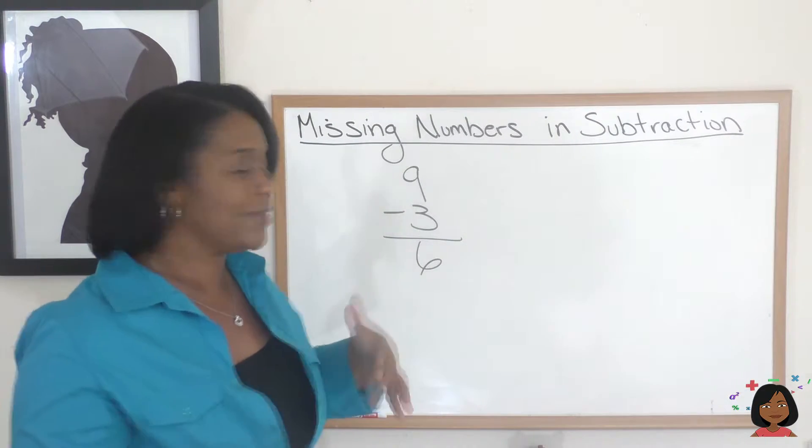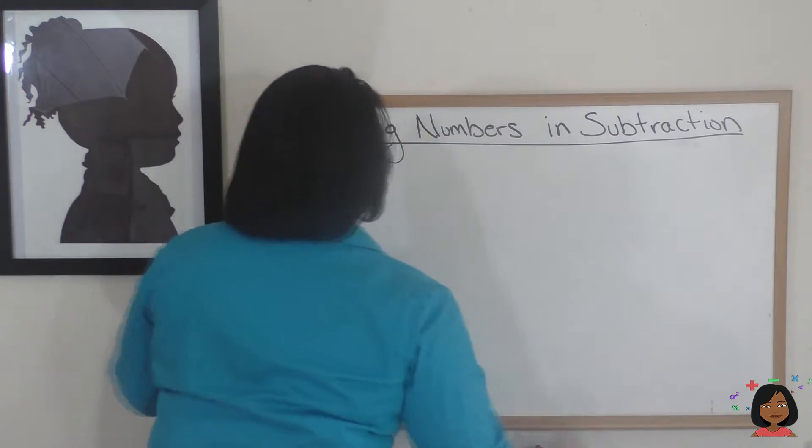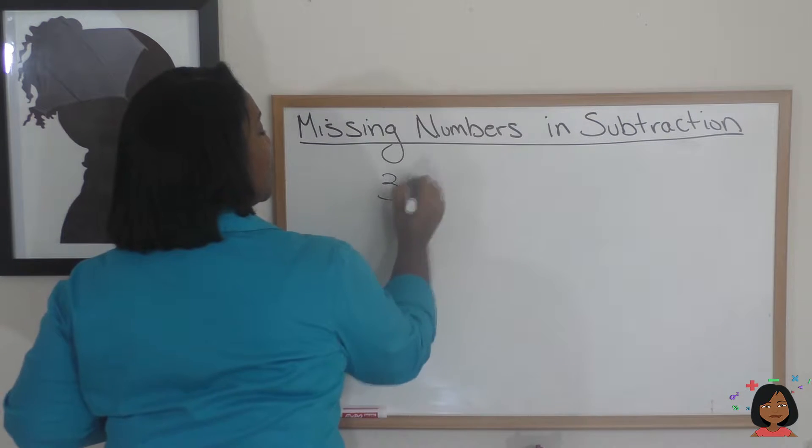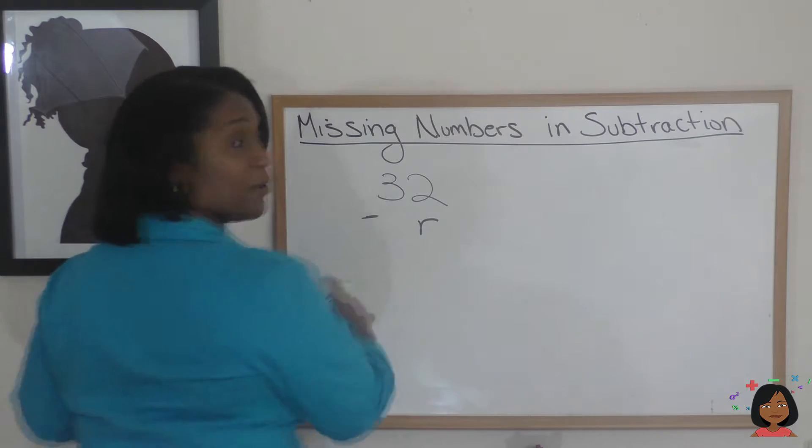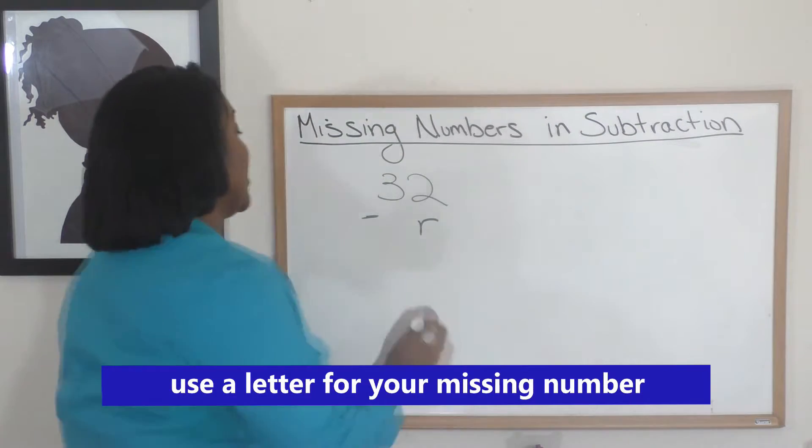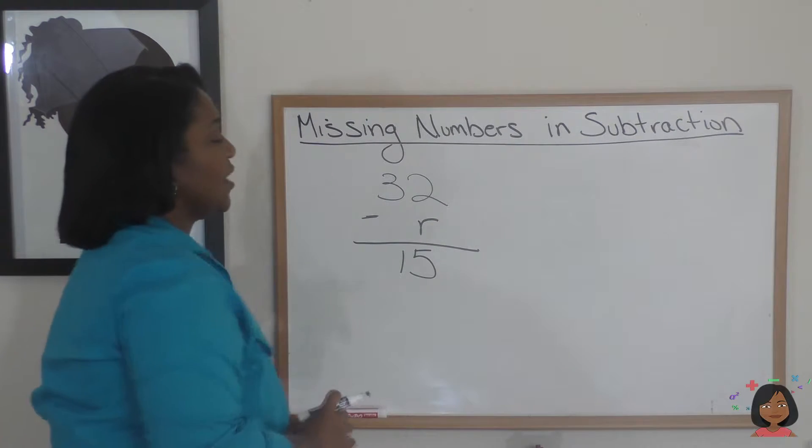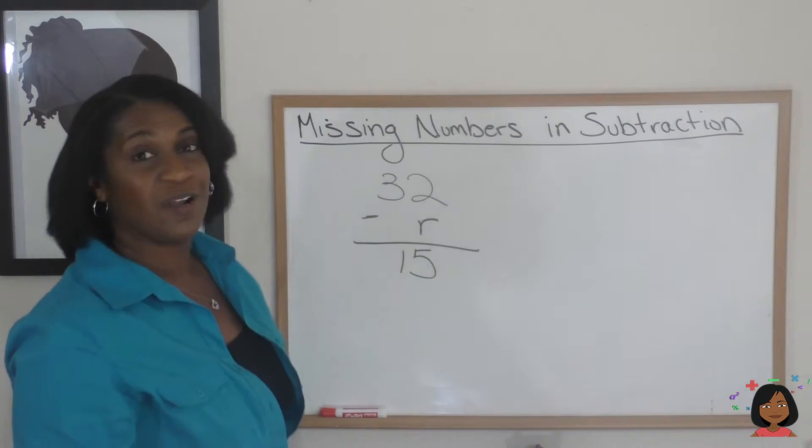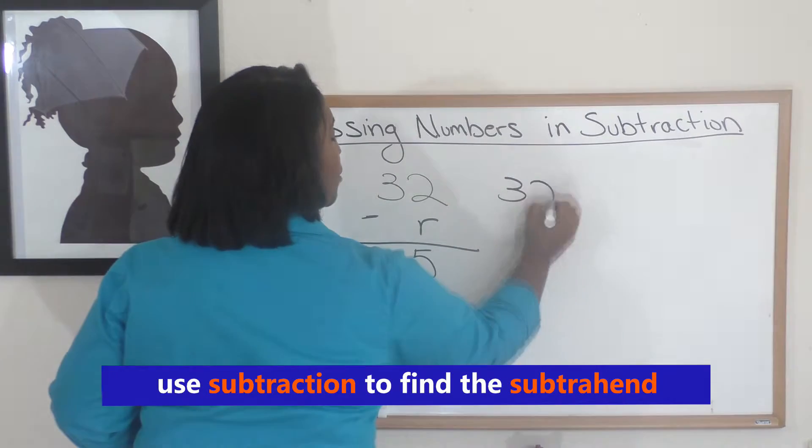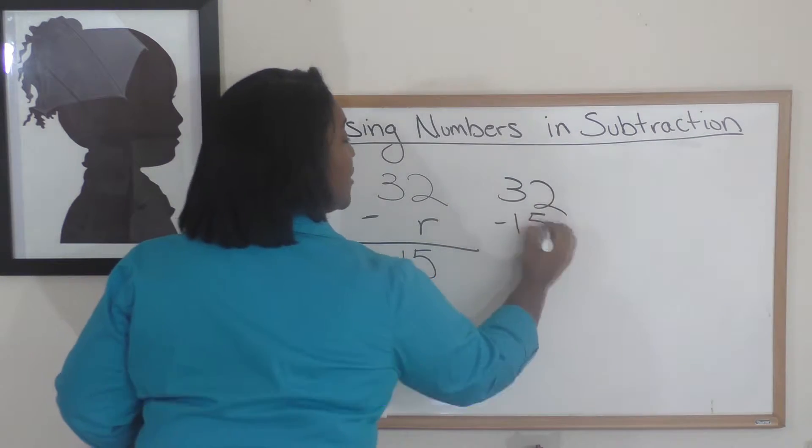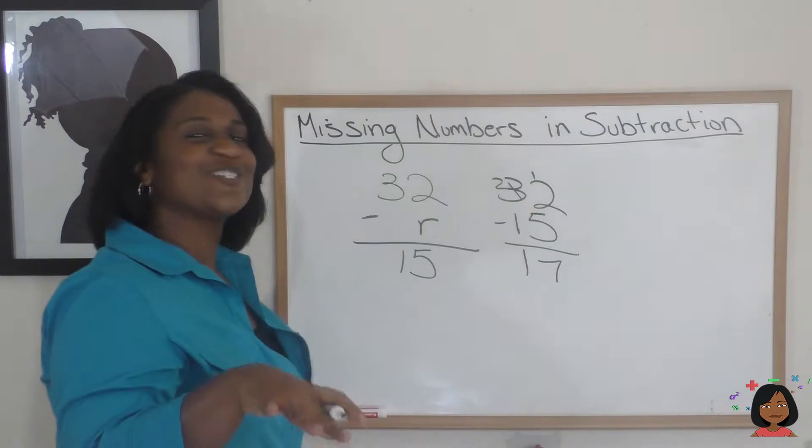So let's give you a little bit more complex example. Let's do 32 minus some number. I'm going to call that number r, because I don't know what that number is, equals 15. So because I am missing this number, we know that I can use subtraction. That's right. I can do 32 minus 15, and that gives us 17.